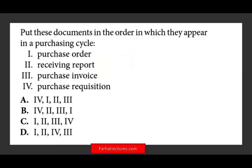The next question asks you to put these documents in the order in which they appear in the purchasing cycle. We kind of did this already. If you know that the purchase requisition is the first document, you can immediately eliminate C and D — so you're already down to 50-50. Then after the purchase requisition comes the purchase order. Once it's approved, the purchasing department will prepare the purchase order.